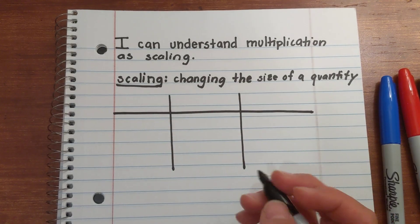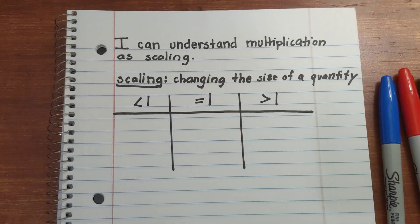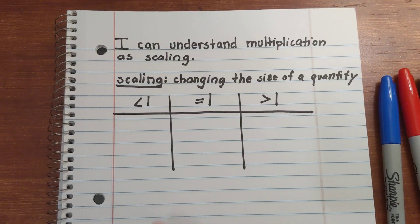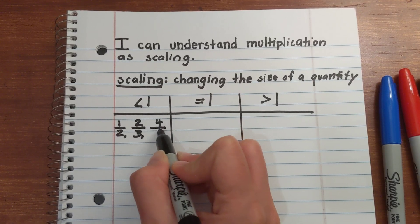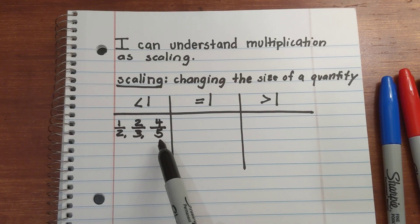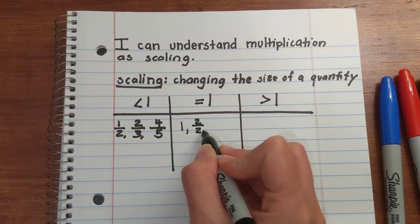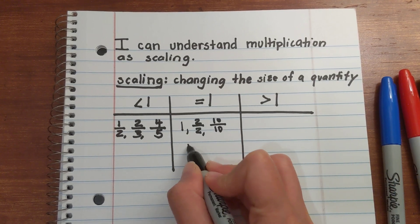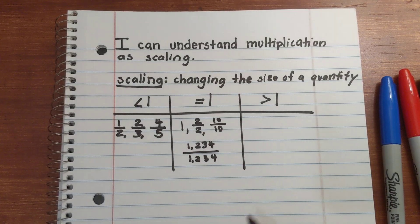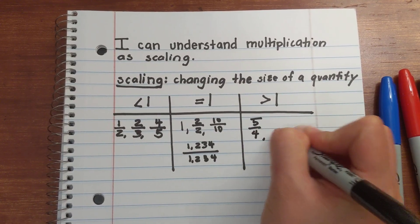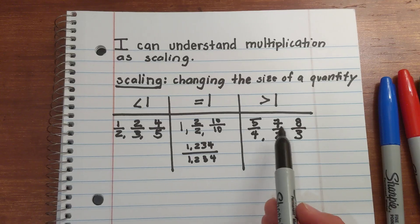Let's make a chart and look at numbers and fractions that are less than a whole, equal to a whole, and greater than a whole. Less than a whole: one half, two thirds, and four fifths — proper fractions where all numerators are less than the denominators. Equal to a whole: one whole, two over two, ten over ten, and one thousand two hundred thirty-four over one thousand two hundred thirty-four — all equal to one whole. Greater than a whole: five over four, seven over two, and eight over three — improper fractions, all greater than a whole.